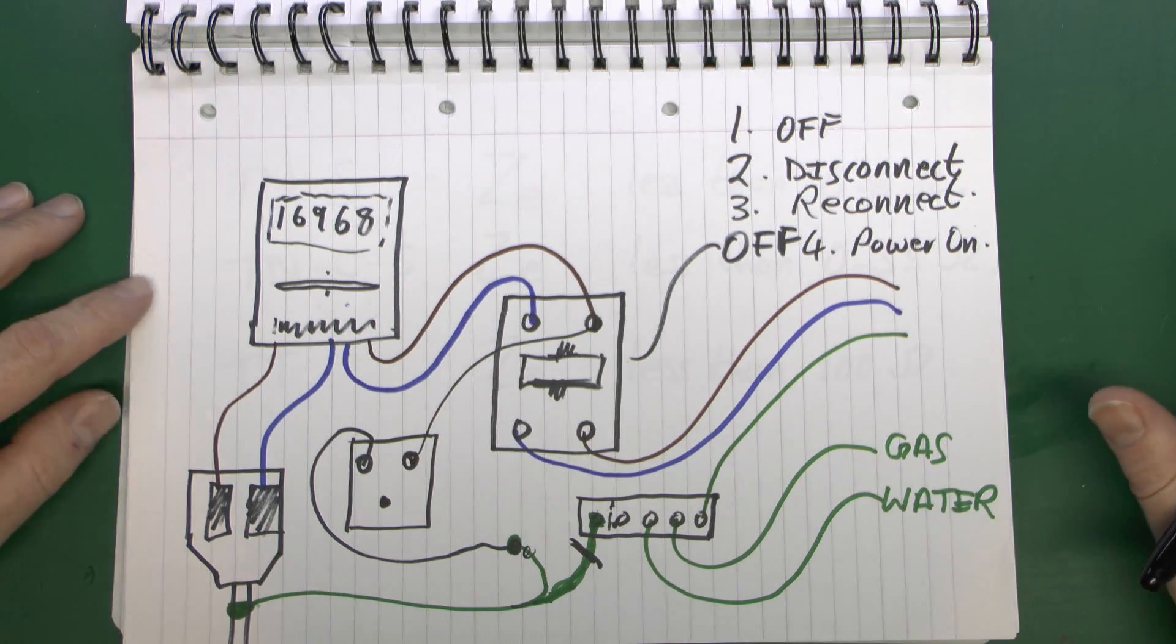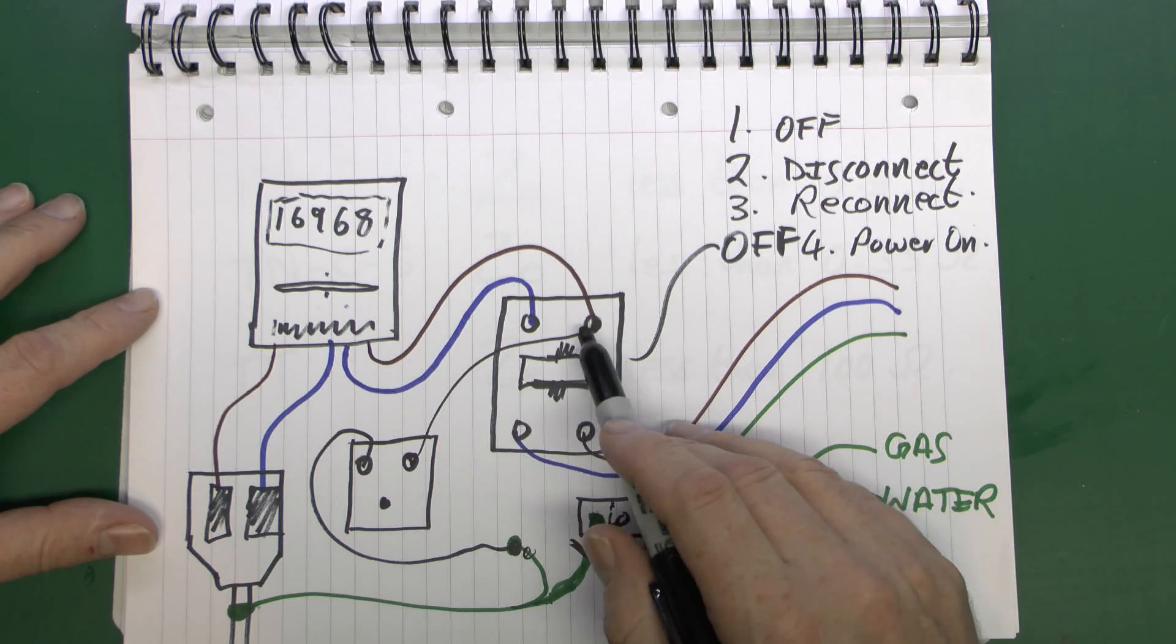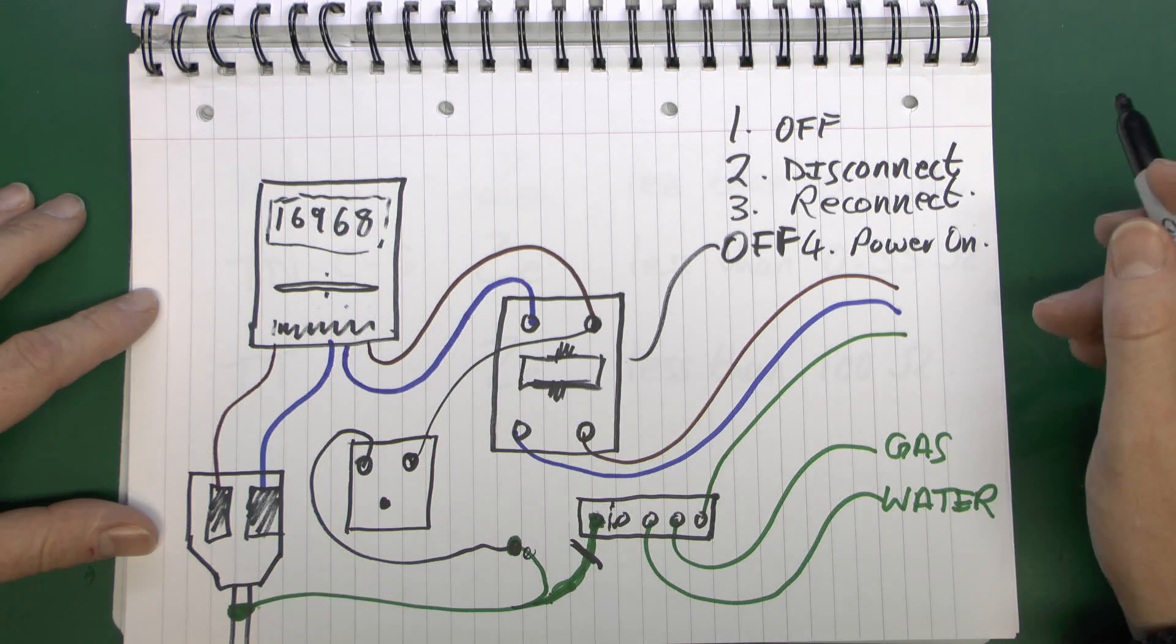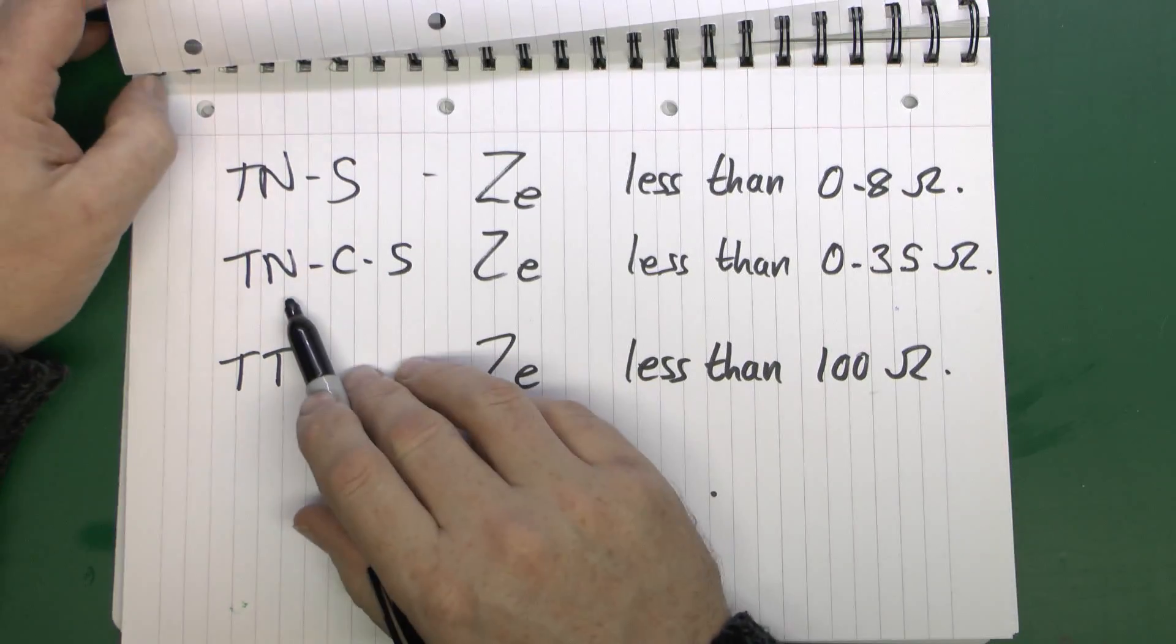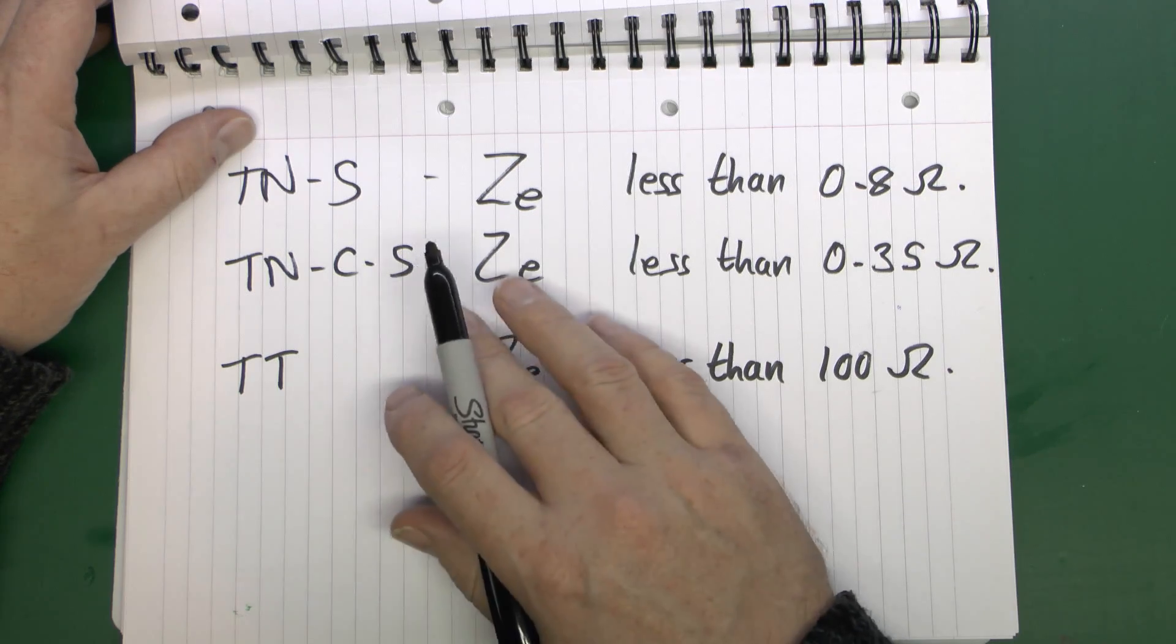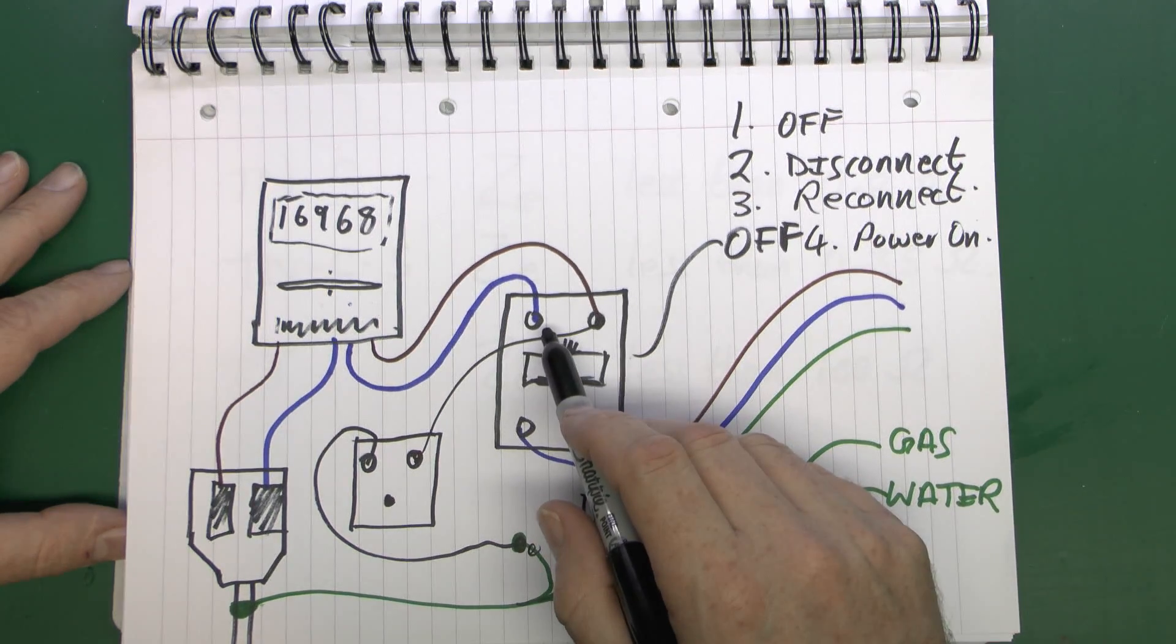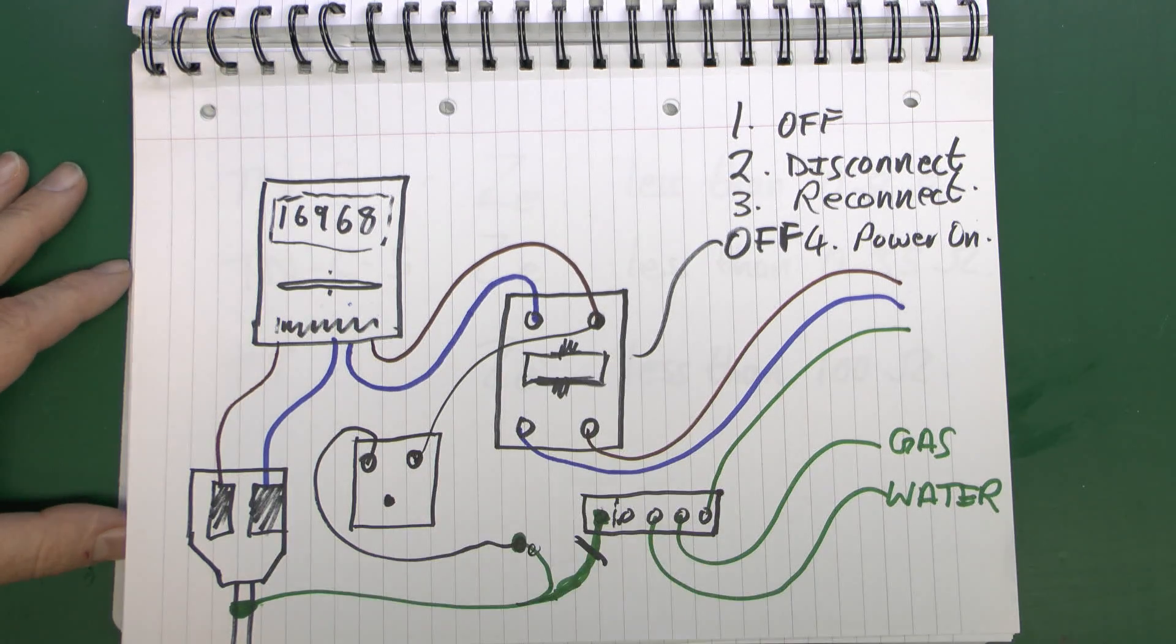Now as well as the fault current between line and earth, you do also need to consider the fault current which could occur if there was a fault between line and neutral. And to test that it's exactly the same procedure, the same device is used, except you would test between the line and rather than the earth you would just test between the neutral of the incoming supply. Now depending on what kind of supply you have, this could actually be the same value as you get for the one for the earth. So for example on the TNCS supply, the cable you're testing is actually the same one because it's the neutral and earth combined, so in that case you would expect the fault current to be exactly the same. However on a TNS system as we've got here, then the actual loop impedance between line and neutral is typically going to be quite a lot less than it would be between line and earth, and then the current will actually be considerably higher. And definitely on a TT system it will be considerably higher there.